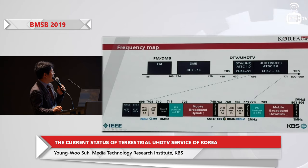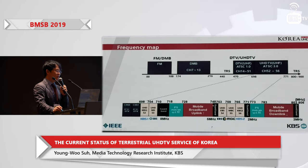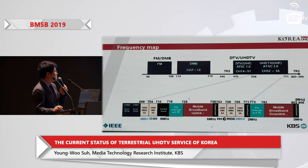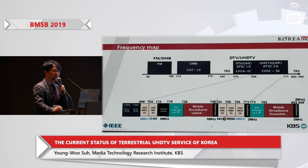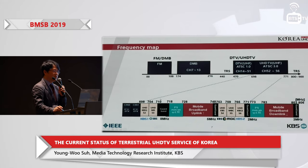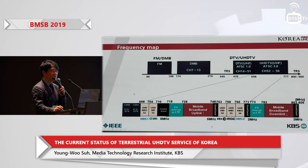KBS has channel one and two — two UHD channels, 6 MHz each. SBS, MBC, and EBS as well. Actually, this band should be used by telecommunications. So we will use this frequency for 10 years, and after that we will move away from this band. We will do the transition from DTV to UHD at that point.